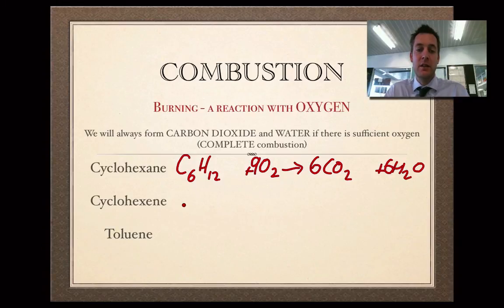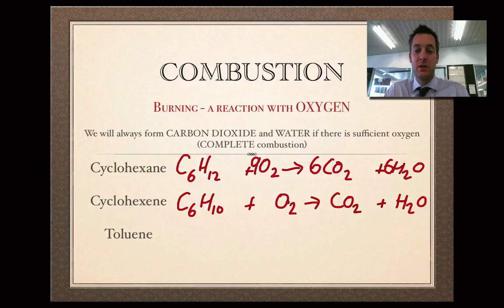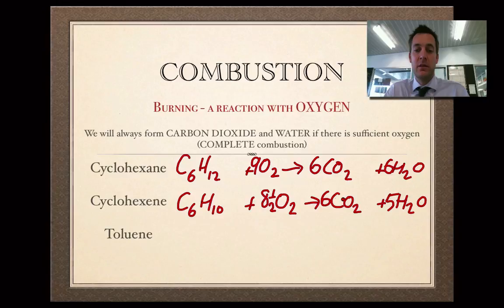If we do it with cyclohexene C6H10 — it doesn't matter whether we've got an alkane or an alkene, we're always going to form carbon dioxide and water. Six carbons give us six carbon dioxides; ten hydrogens give us five waters. Twelve plus five is seventeen, so we need eight and a half oxygens. You could double everything to get rid of the half numbers, giving you coefficients of 2, 17, 12 and 10.